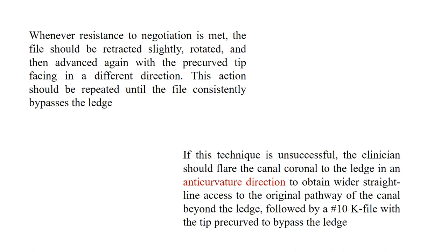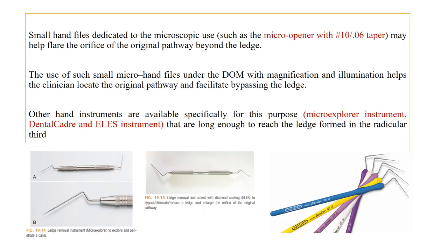Whenever you feel resistance, retract the file slightly, rotate it, and advance again so the pre-curved tip faces a different direction — by this way you can look for a catch. If this technique is unsuccessful, flare the canal coronal to the ledge in an anti-curvature direction to obtain wider straight-line access to the original canal. Small hand files dedicated to microscopic use, such as the Micro Opener with tip size 10 and 6% taper, help flare the orifice of the original pathway beyond the ledge.